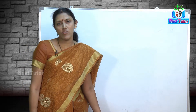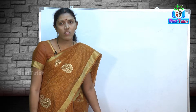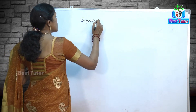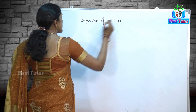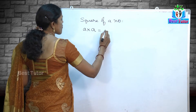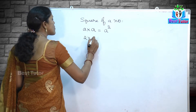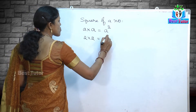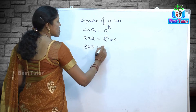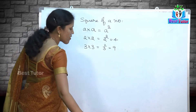Hello friends, welcome to Best Tutor. This is Rama Vishwanathan. In today's video we are going to learn about squares and square roots of numbers. The square of a number is a number 'a' being multiplied by itself, called the square of number 'a'. It is written as 'a' raised to the power of 2. So the square of 2 is 2 into 2, which is 2 squared, equal to 4. The square of 3 is 3 into 3, equal to 9.